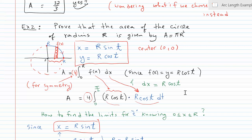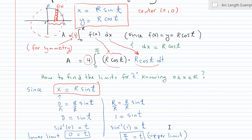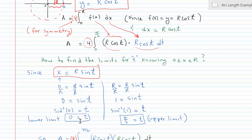The only part remaining is determining the limits for t. I know the x limits are between 0 and r, and since I'm switching from x limits to t limits, I'll use the function x = r sine t. Substituting the lower bound 0 and upper bound r for x and solving gives us the lower and upper limits for t, which are 0 and π/2.